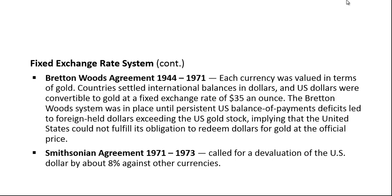Remember that dollars were convertible into gold, and if foreigners hold more dollars than the amount of gold the US has, then the US will not be able to fulfill its obligation to redeem dollars for gold at the official price. To adjust for this, the Smithsonian agreement called for a devaluation of the US dollar by about 8% against other currencies — the gold exchange rate went from $35 an ounce to $38 an ounce — but that still wasn't enough, and eventually the whole system was disbanded.